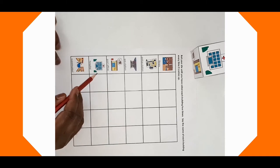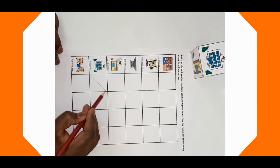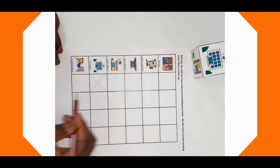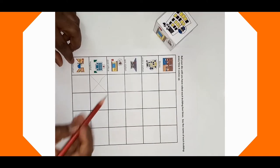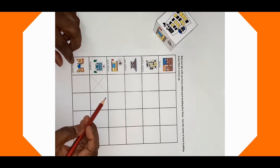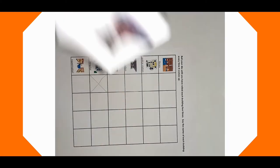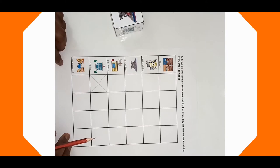If the student says correctly, cross the box next to the picture. If they couldn't say it, tell them what that picture is and don't cross the box. Roll the dice until you have crossed each box next to the pictures.